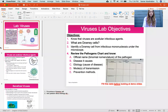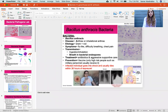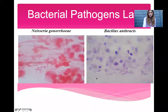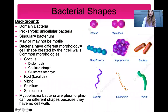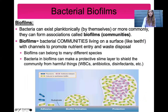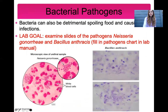The next lab is the bacteria lab. You'll also use this lab to fill your pathogens chart. In this lab, you learn about Neisseria gonorrhoeae and Bacillus anthracis — both bacteria that cause different diseases. Know what they look like under the microscope. This lab also covers biofilms and bacterial nutritional pathways. Chemoorganoheterotrophs are medically important because they typically cause disease — they take energy and carbon from the host.